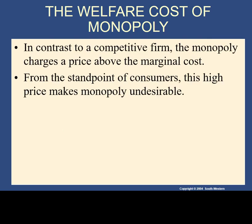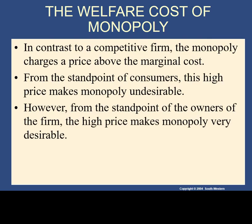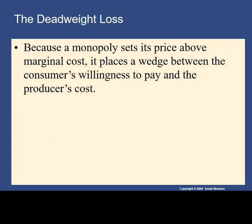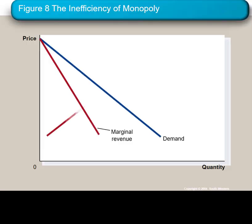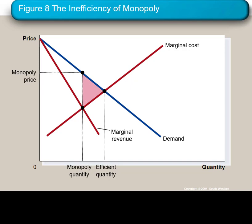We're also interested in identifying the deadweight loss associated with monopoly — we call that the welfare cost because we're talking about social welfare, and our measure of social welfare is total surplus. The real issue is that the monopoly, by setting its price higher than the competitive price, creates a deadweight loss triangle. This triangle corresponds to what in the case of a competitive outcome is the efficient quantity.